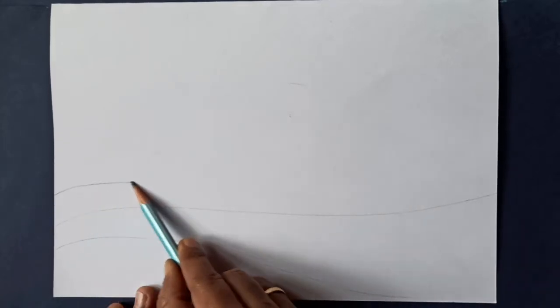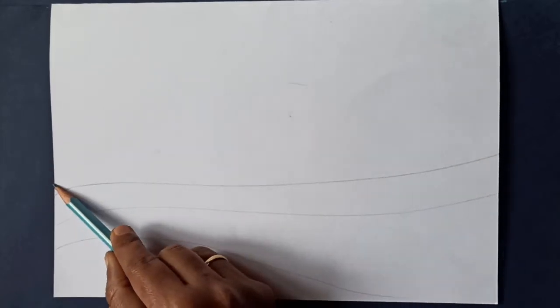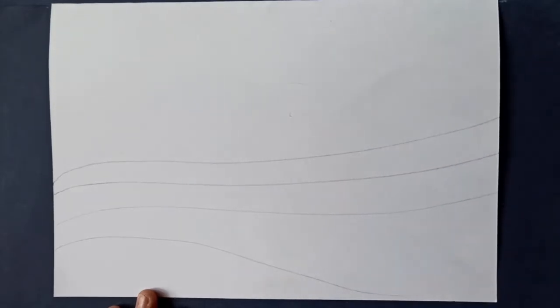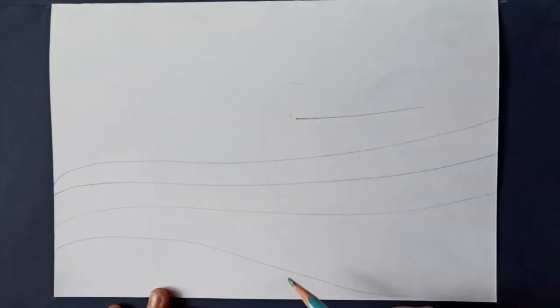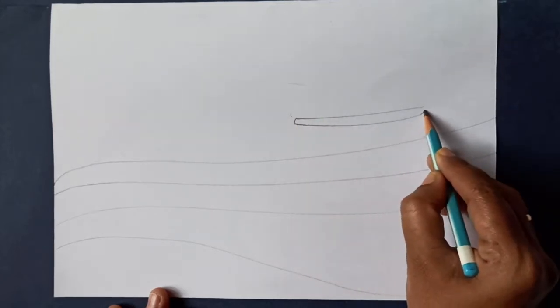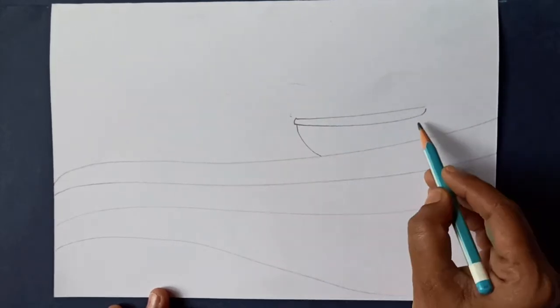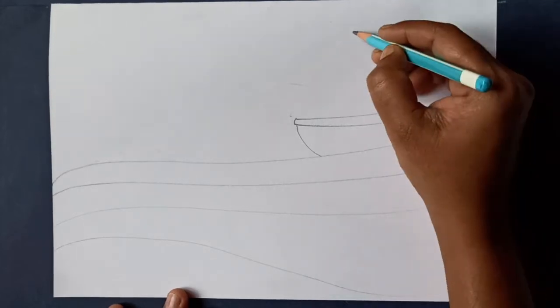Draw two lines for a boat. Draw two angled lines.